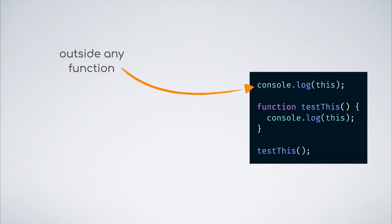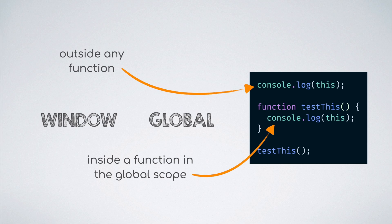Let us see how this keyword behaves in the global context. In the global context, or inside of a function placed directly in the global context, the this keyword points to the global or the window object. Like in this case, the console would log the global object in Node.js and the window object in the browser.